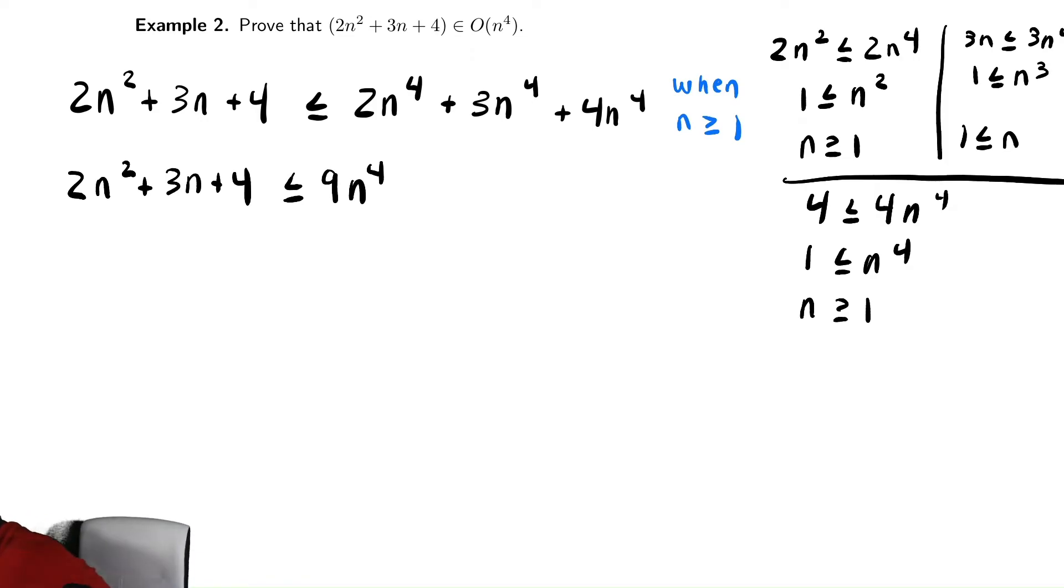So we found that c is equal to 9, and n naught is equal to 1. You don't necessarily need to write those things down. We could have done the same thing for the previous problem. Some students like to do this just to make sure that they did the right thing in the end. They can actually identify what are the constants. If you would like to do that, go for that. That is not required, though, for such a problem.